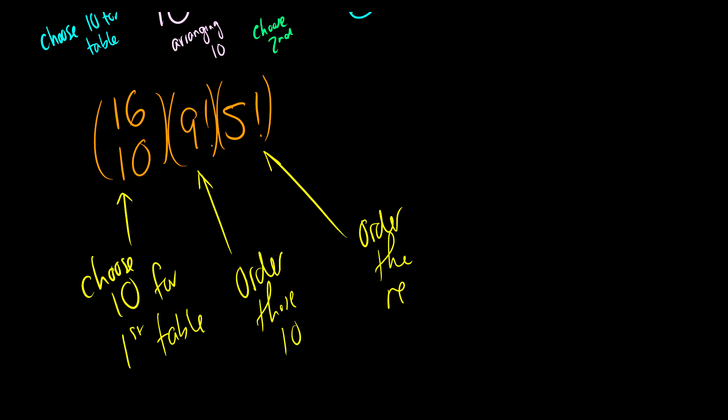This is one of the harder problems you can do for permutations and combinations, and it has a circular table in there. If you have any questions or more questions you want answered, please leave them in the comments below and I'll answer them as quickly as I can.